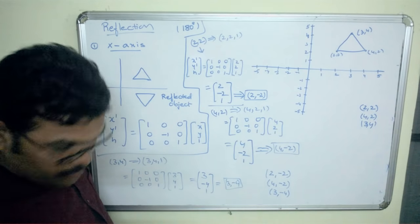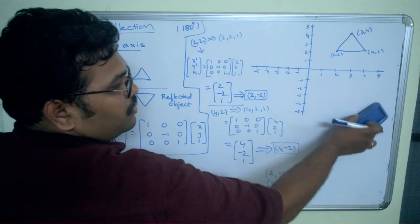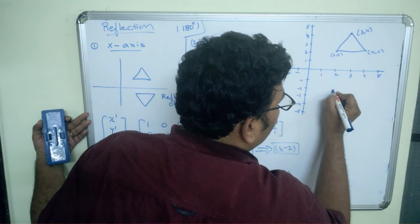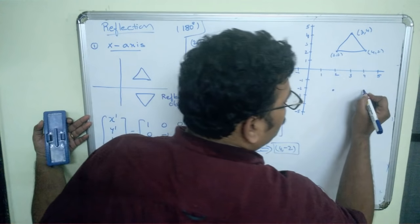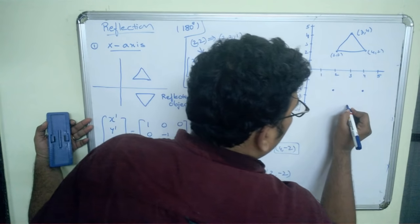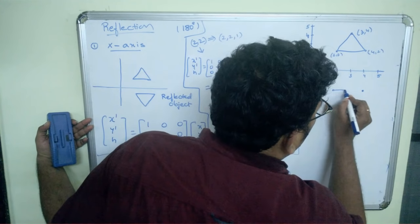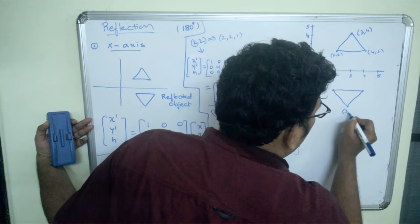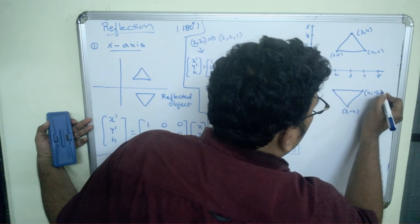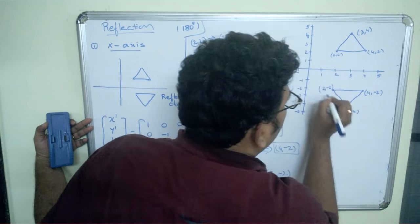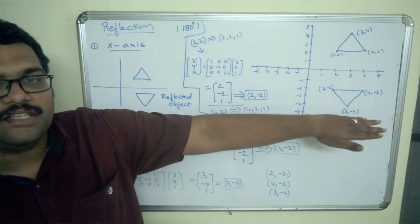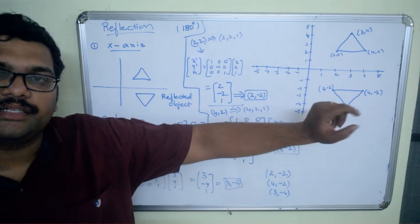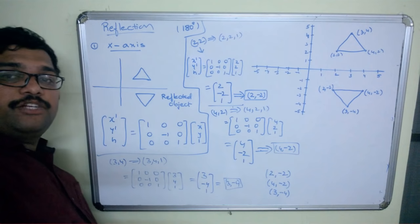The new points are (2,−2), (4,−2), and (3,−4). Plotting these: (2,−2) here, (4,−2) here, and (3,−4) here. This is just a mirror image — it is called reflection — meaning the object has been rotated 180 degrees. This is the reflection with respect to the x-axis.